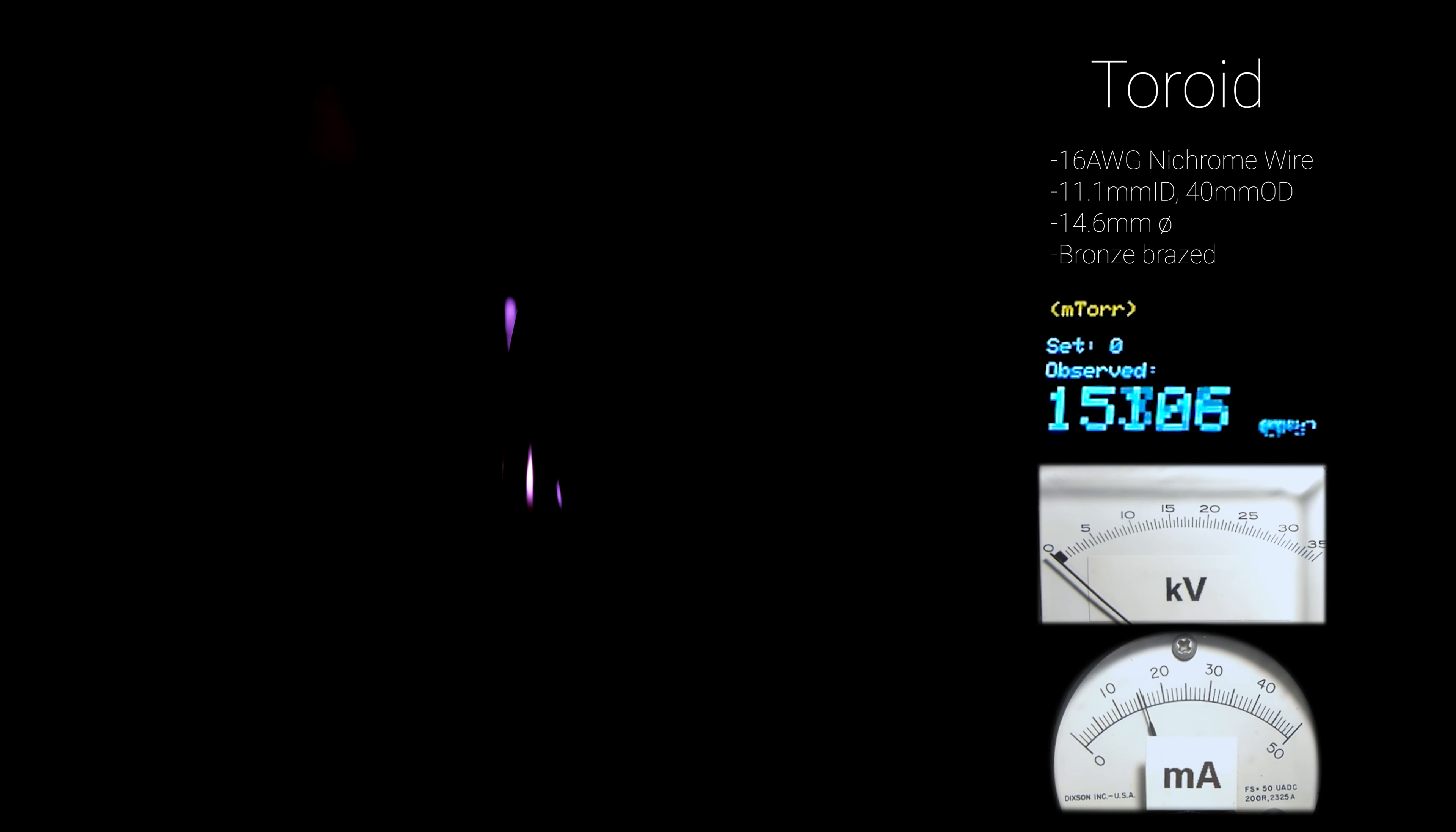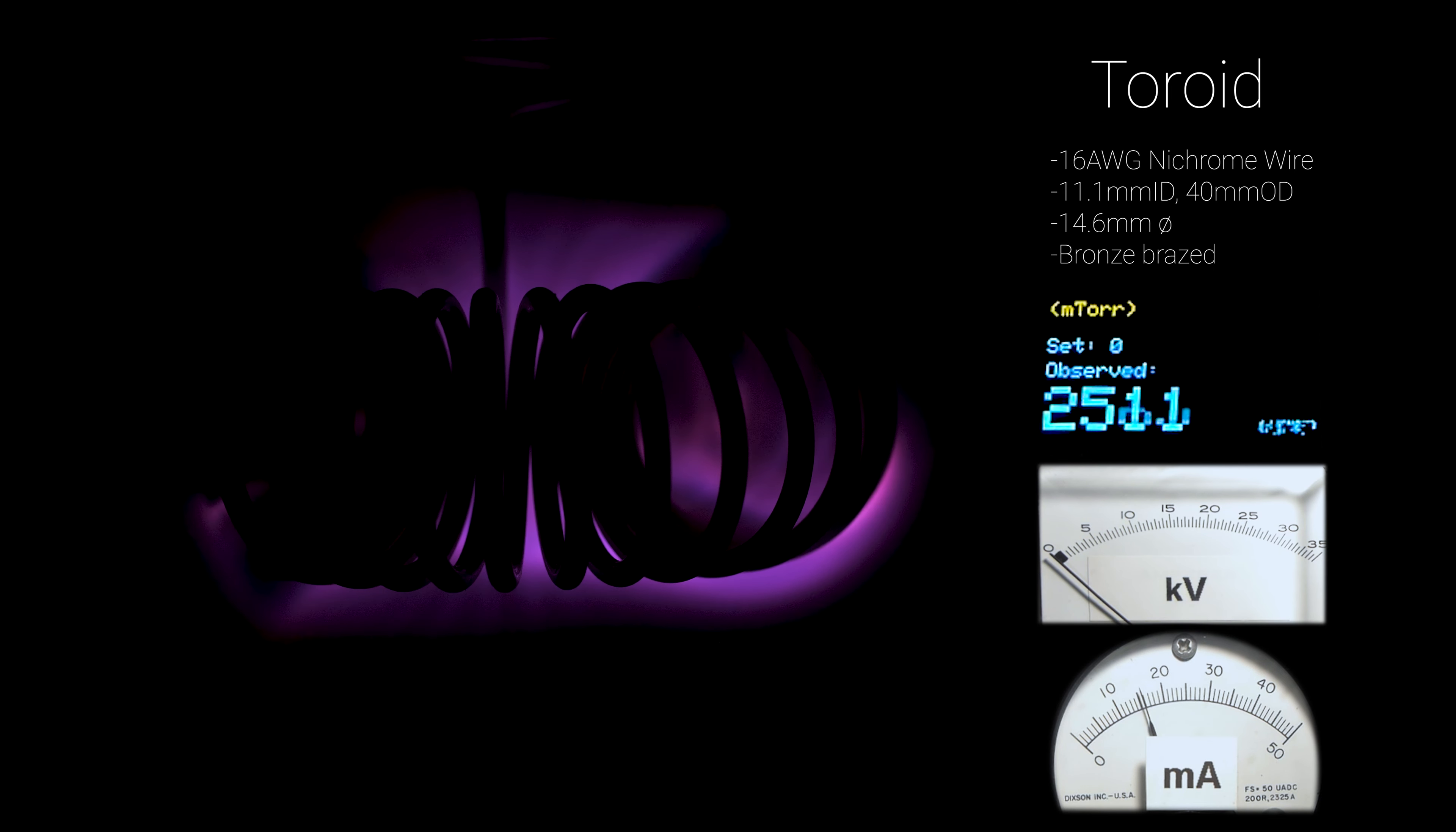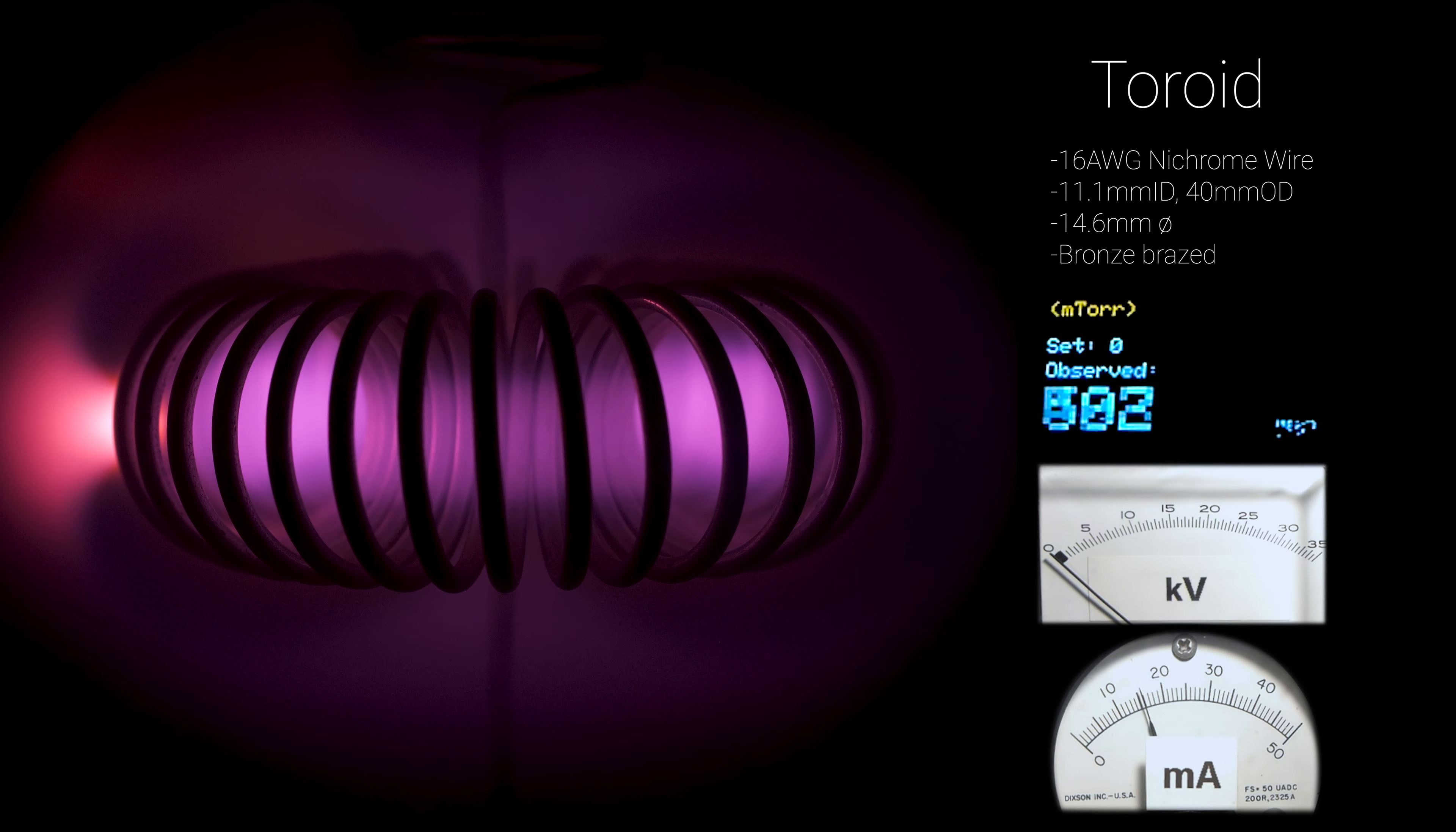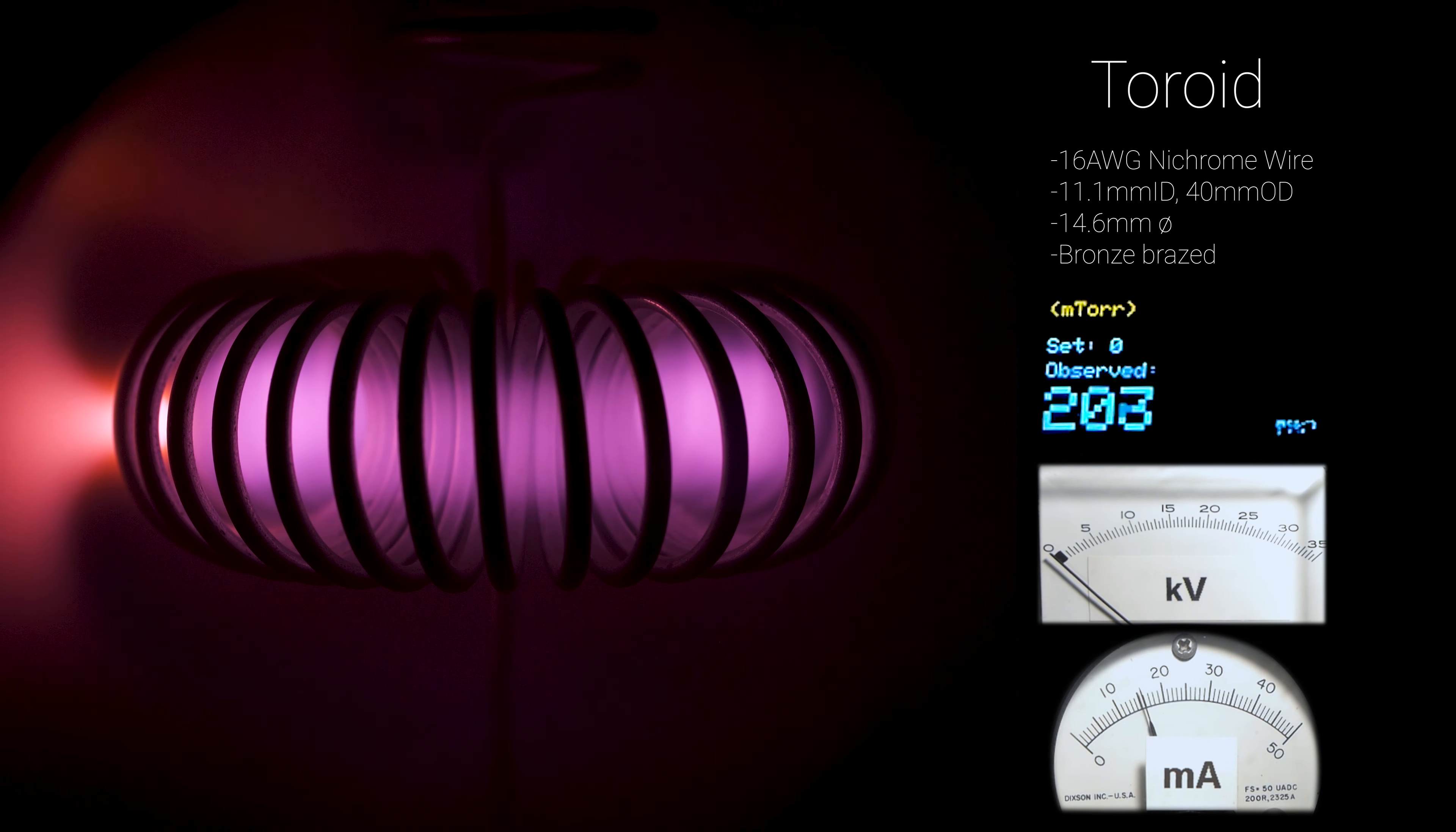And lastly we have the toroid grid, or as Mark Rowley from fuser.net aptly dubbed it the toka grid. I honestly didn't know what to expect from this grid, but it certainly didn't disappoint. You can see that at these high pressures it truly looks like the plasma is confined within the ring.